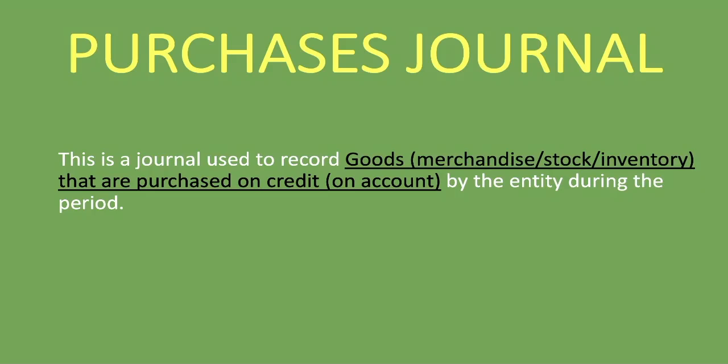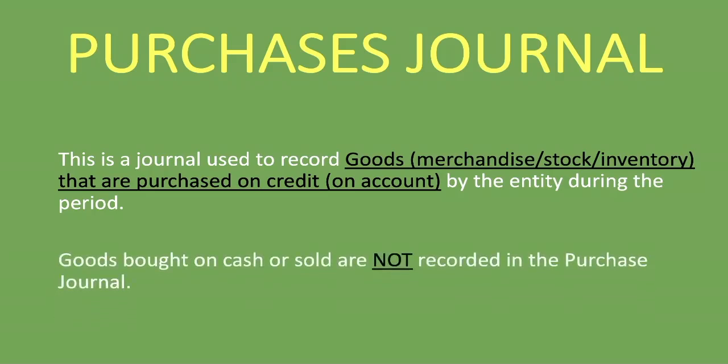It's important to note that goods bought on cash or sold are not recorded in the purchases journal. If you bought goods on cash, you would record that in the cash payments journal. And if you've sold goods on cash or on credit, you would not record those in the purchases journal.